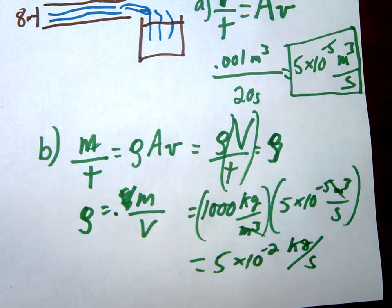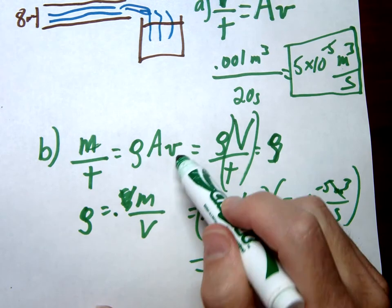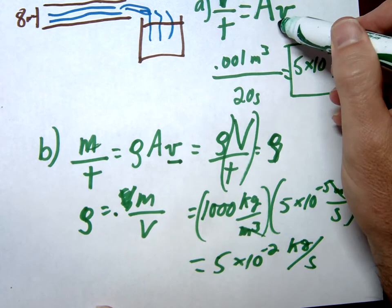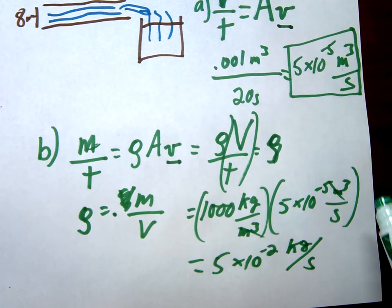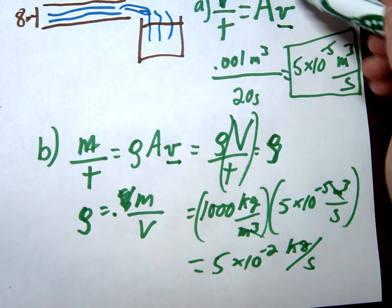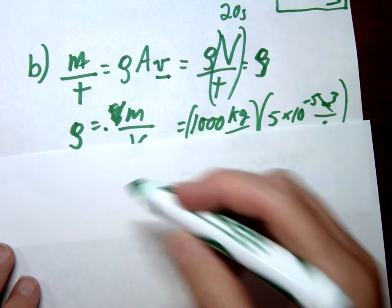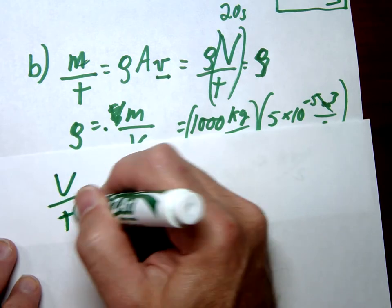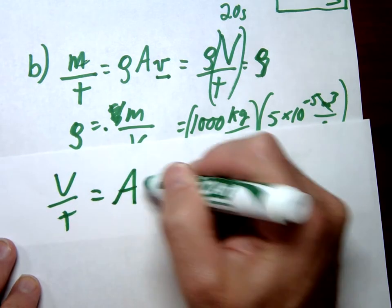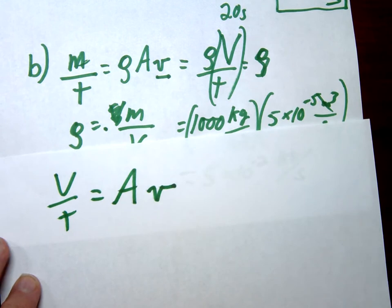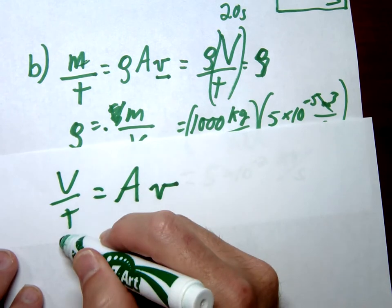How fast is the water moving through the hose? So at this point, we're looking for our velocity. So we could use either of these two equations to go ahead and calculate that out. I'm going to simply use the area times velocity with the volume flow rate. So again, this would be the volume flow rate V over t should equal the area times our velocity. And so since we already know the volume flow rate, that was 5 times 10 to the negative 5th times our area.